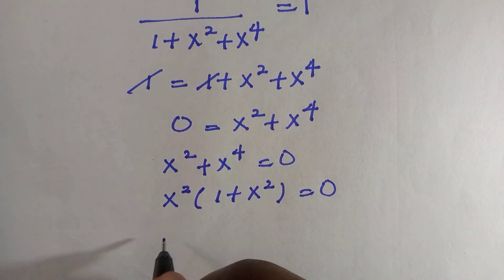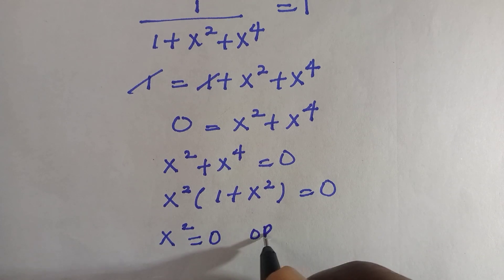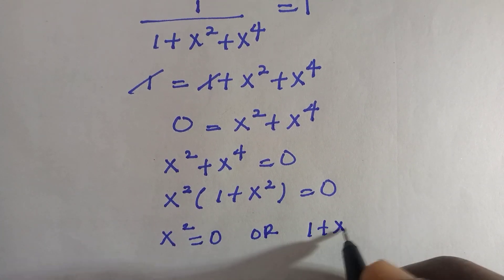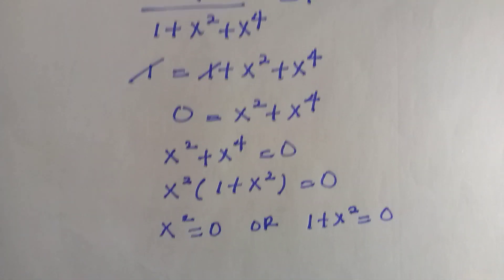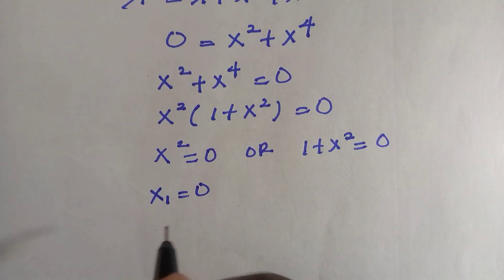And I let x squared equals to 0, or 1 plus x squared equals to 0. Alright, and here we have x squared equals to 0.